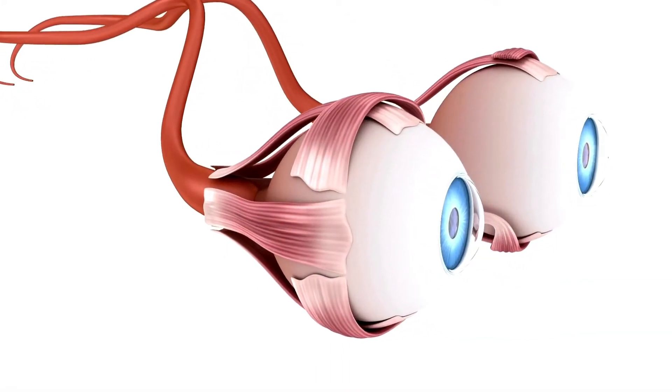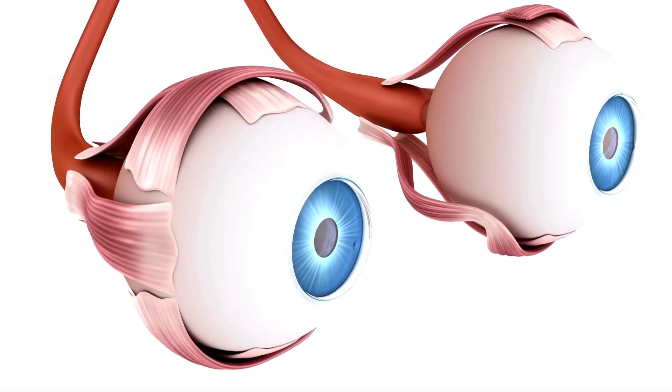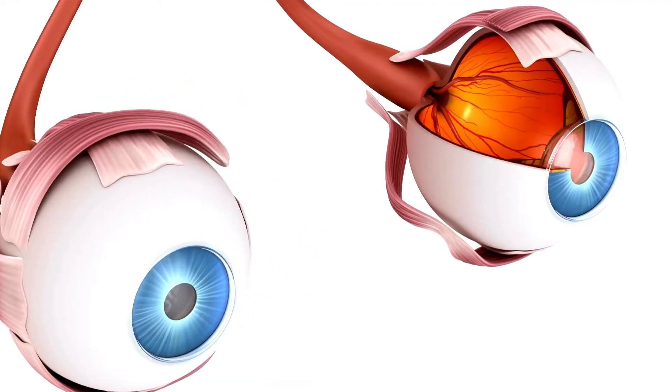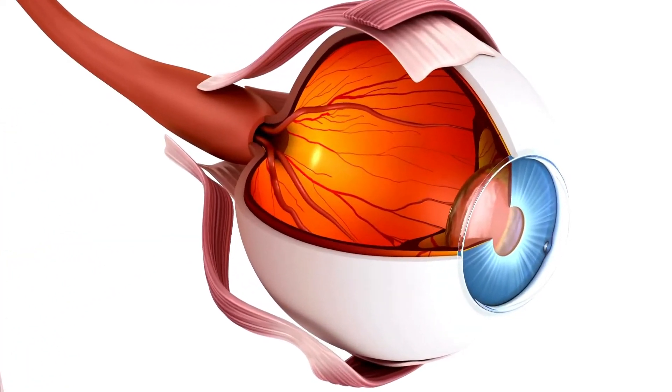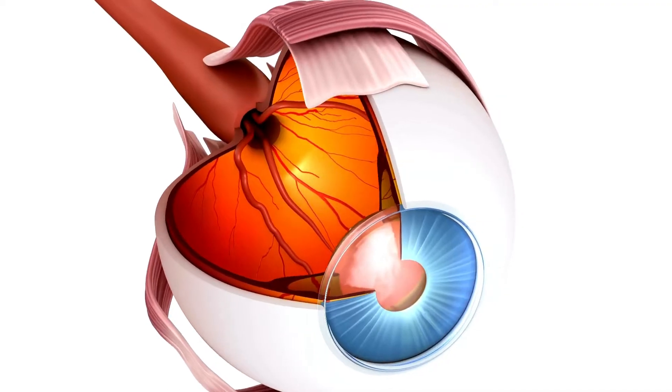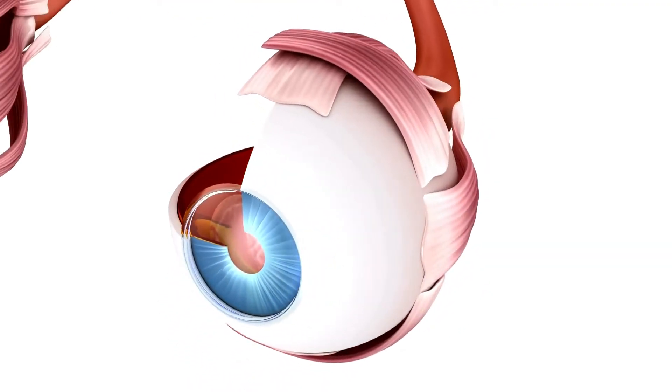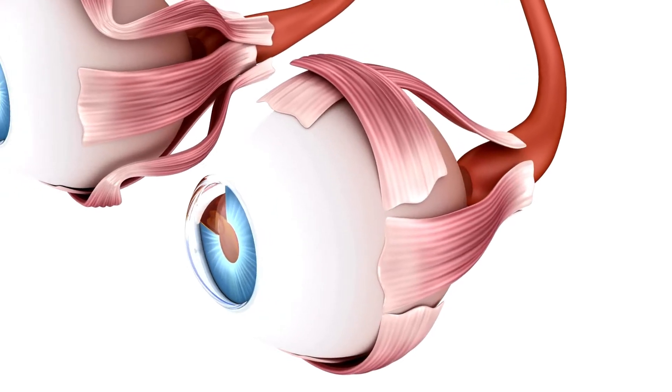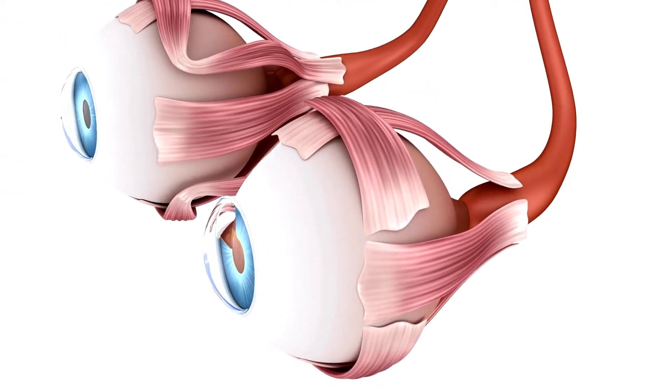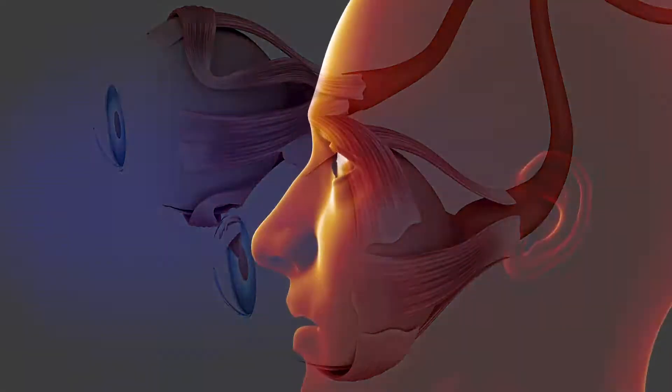Let's dive into the extraordinary complexity of the human eye. Picture this: a spherical structure, barely an inch in diameter, yet capable of distinguishing between millions of colors, adjusting to varying light conditions in an instant, and providing us with crystal-clear, three-dimensional images of the world around us. Astonishing, isn't it?